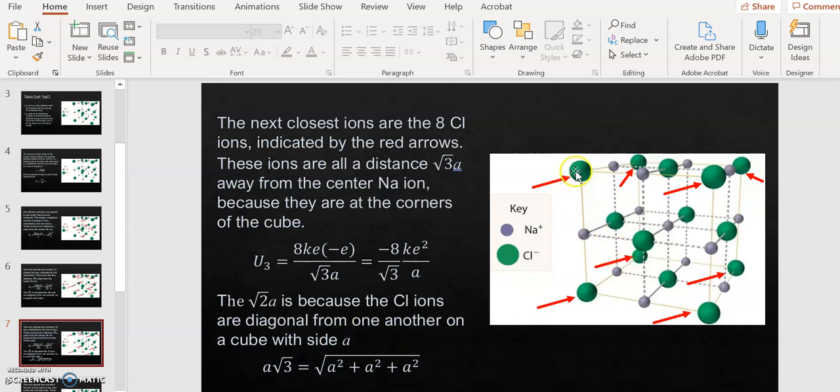Another way to look at it, if you don't like that explanation, is to make another right triangle. The right triangle would go from the top of this chlorine ion down to this sodium ion, which is on the diagonal from the sodium ion in the center. This is root 2A on the base of that triangle, this is A, which would make the hypotenuse root 3A. There's eight of these ions because there's eight corners to our cube. So that makes the total potential energy U3 for the ions at this distance from the sodium to be minus 8 KE squared over root 3A. The minus sign comes because these are oppositely charged, so it's plus E times minus E.